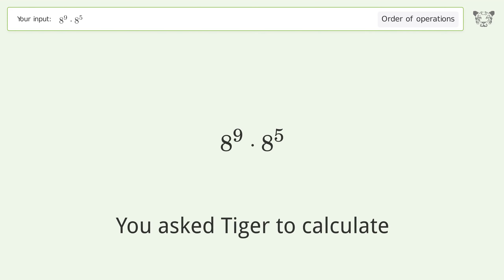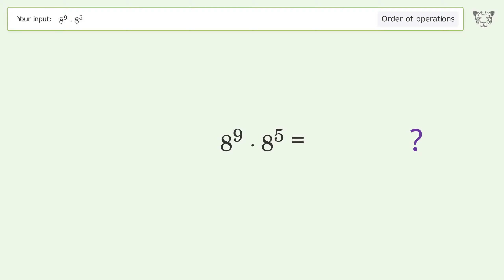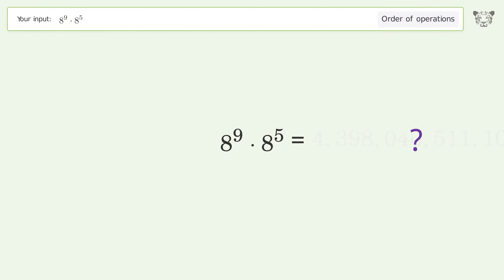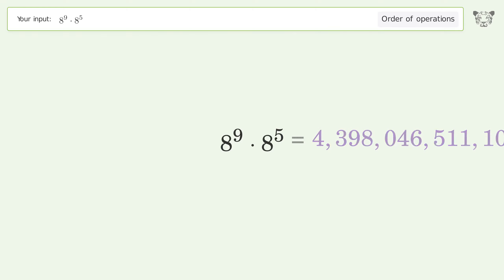You asked Tiger to calculate this. It deals with the order of operations. The final result is 4,398,046,511,104.